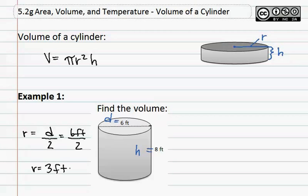Now that we know our radius and our height, we may complete this question. We know that the volume is pi times the radius, or three feet, squared times the height, or eight feet.